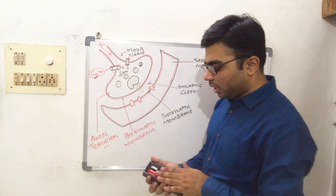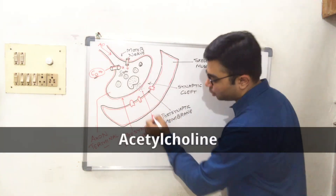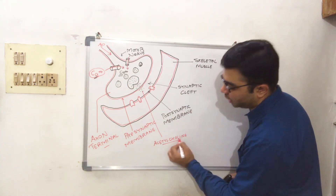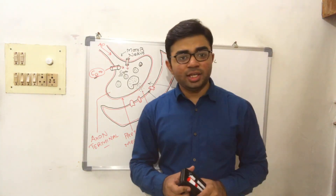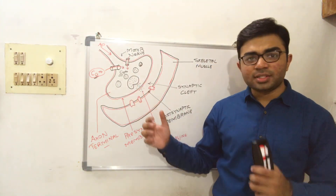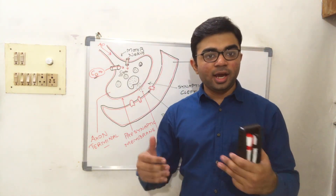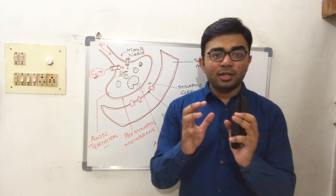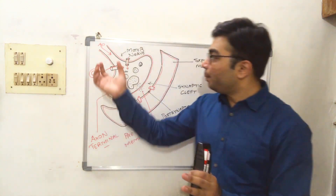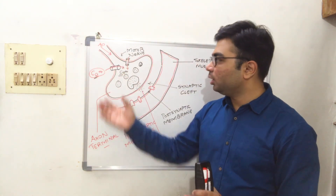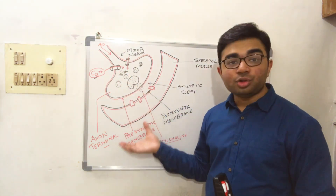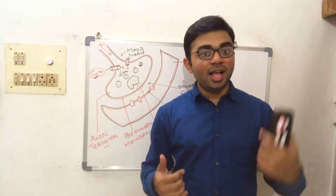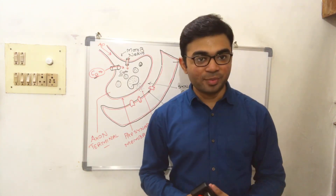This neurotransmitter is termed acetylcholine. As we know, in the neuromuscular junction there is no physical connection between the axon terminal and skeletal muscle — we have a synaptic cleft. Acetylcholine is a chemical substance that helps in the transmission of impulses from the axon terminal to the skeletal muscles, transferring impulses without any physical connection between the axon terminal and the muscle fiber.